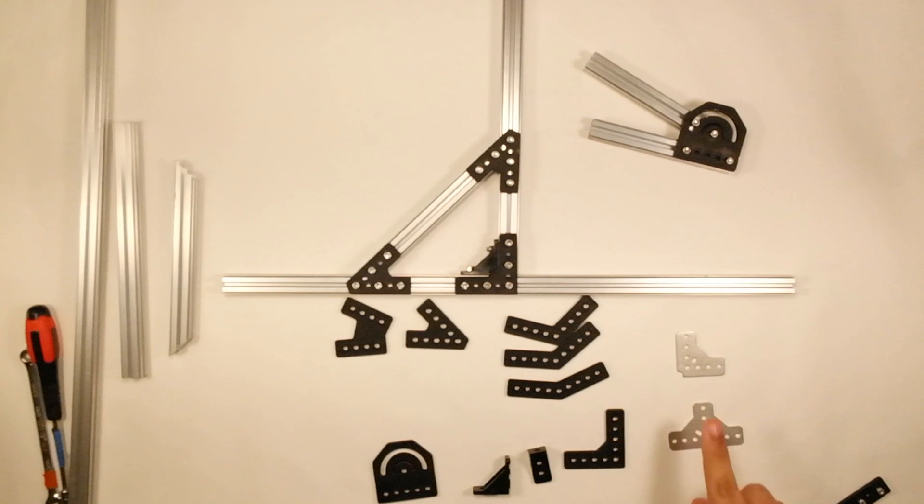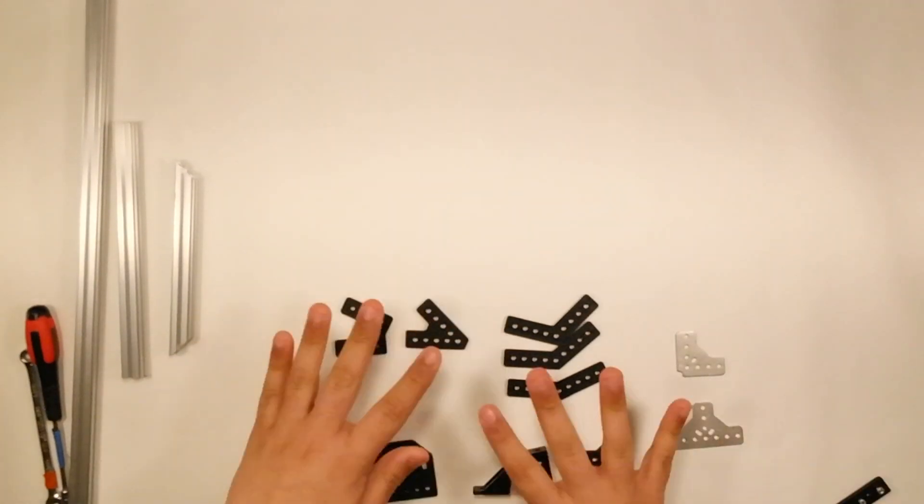There are also metal brackets, which are stronger than the plastic brackets included in the kit. We are now going to show you how to put two pieces of REV extrusion together using brackets.